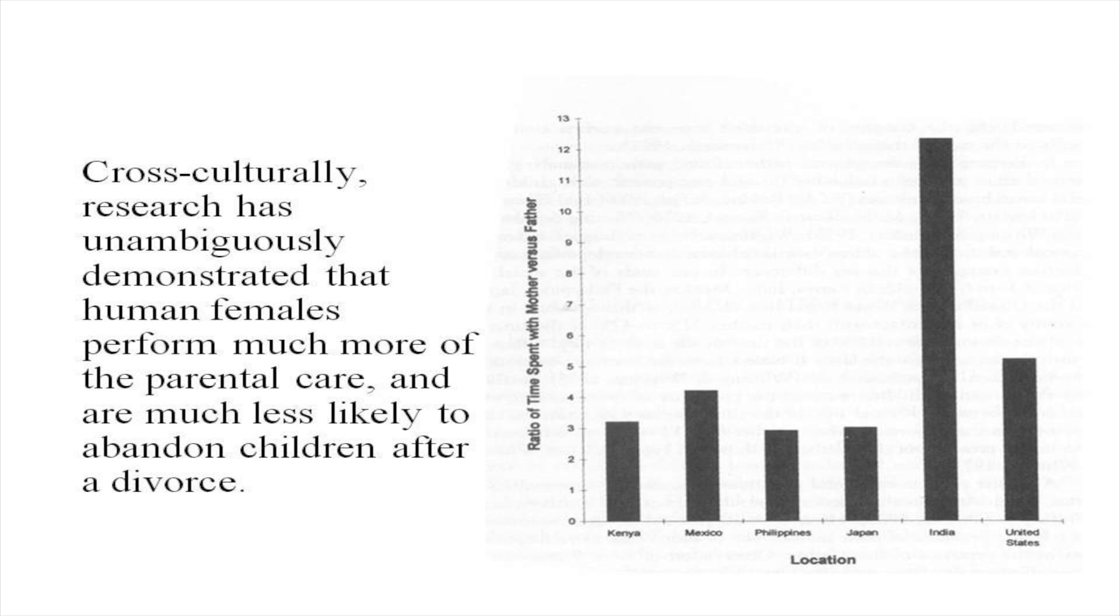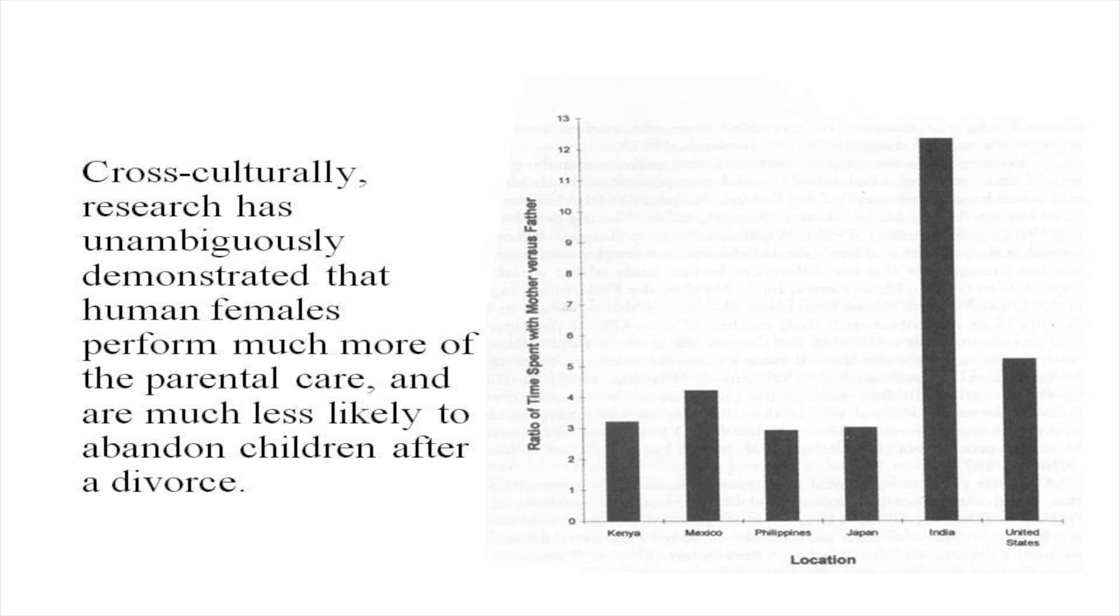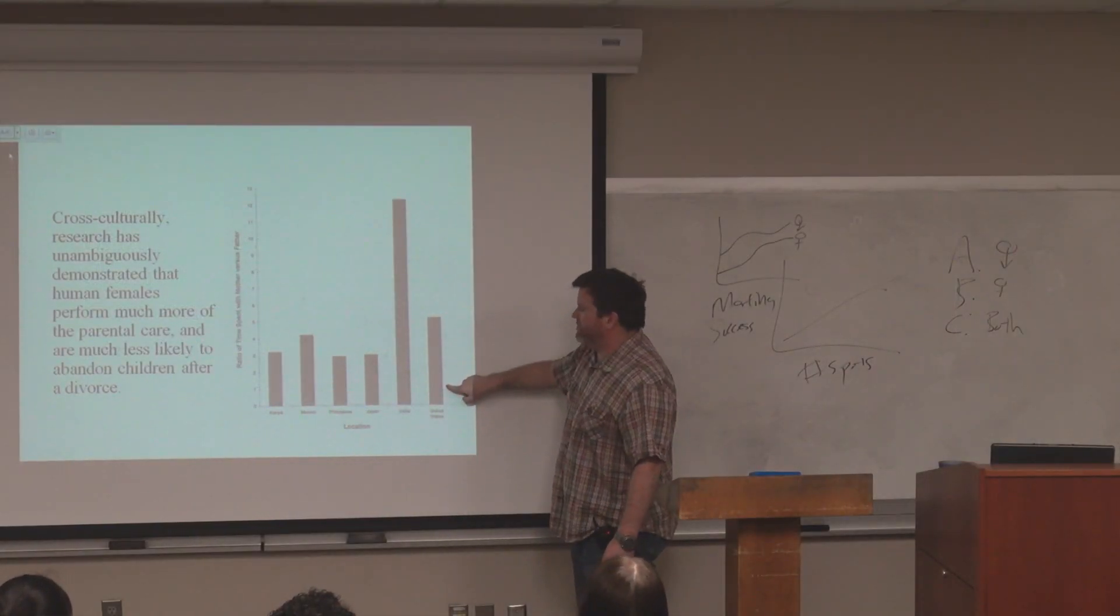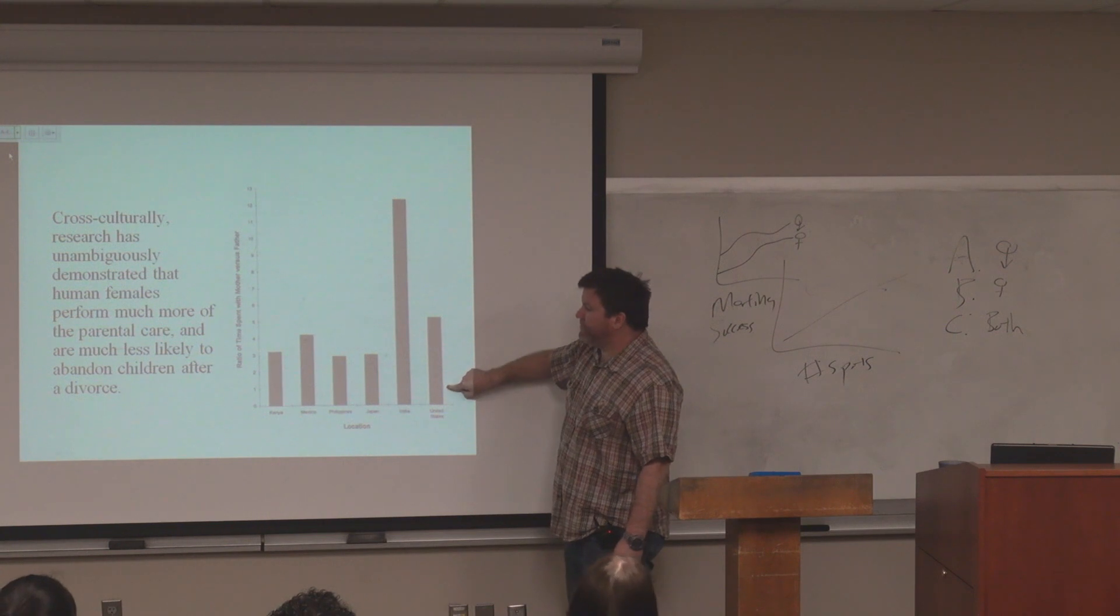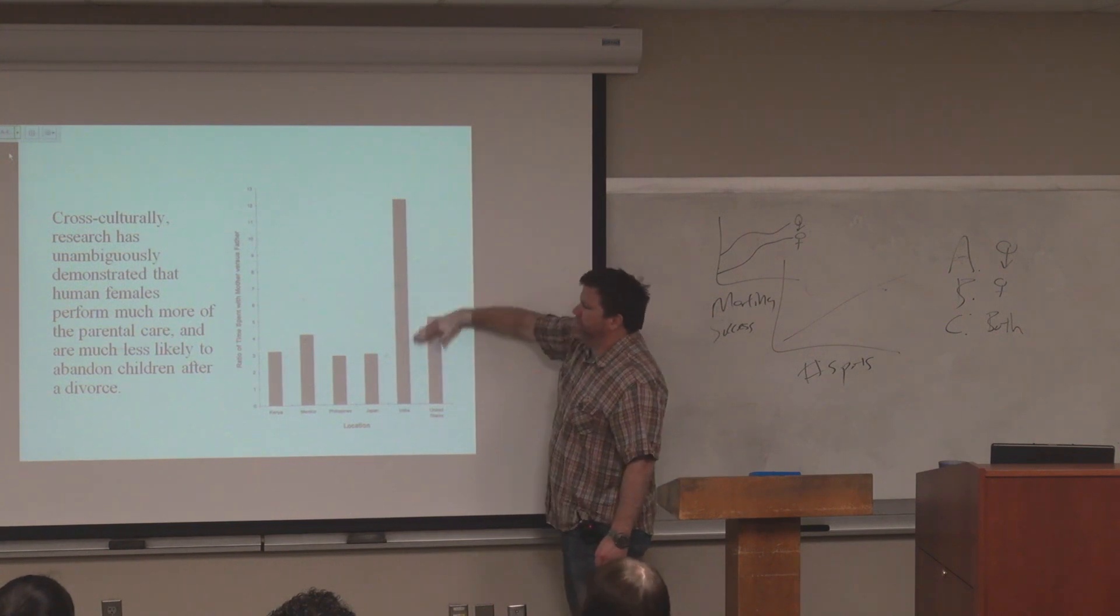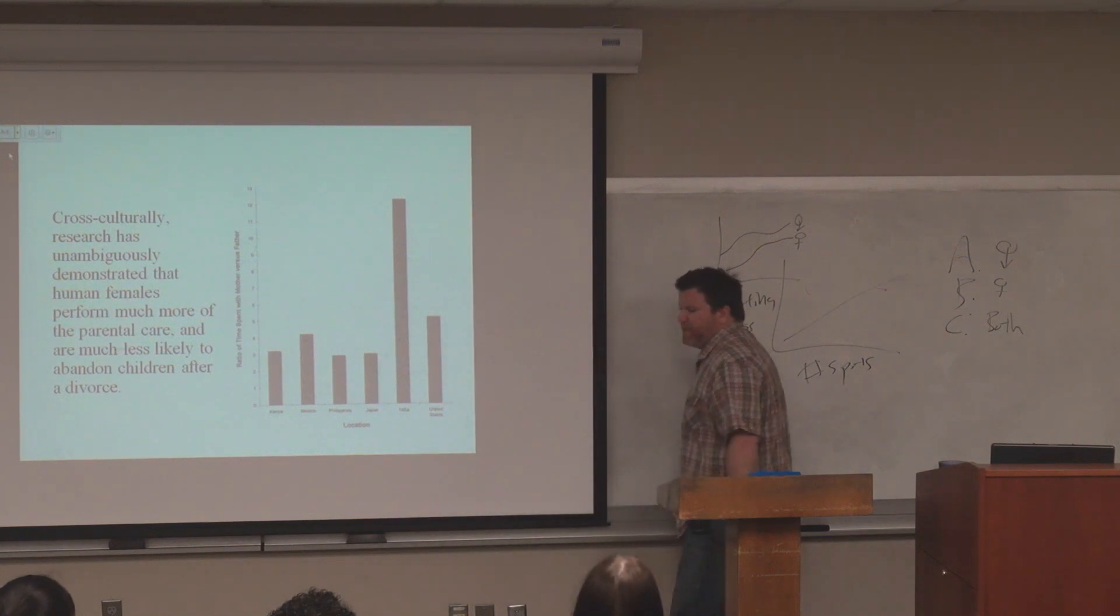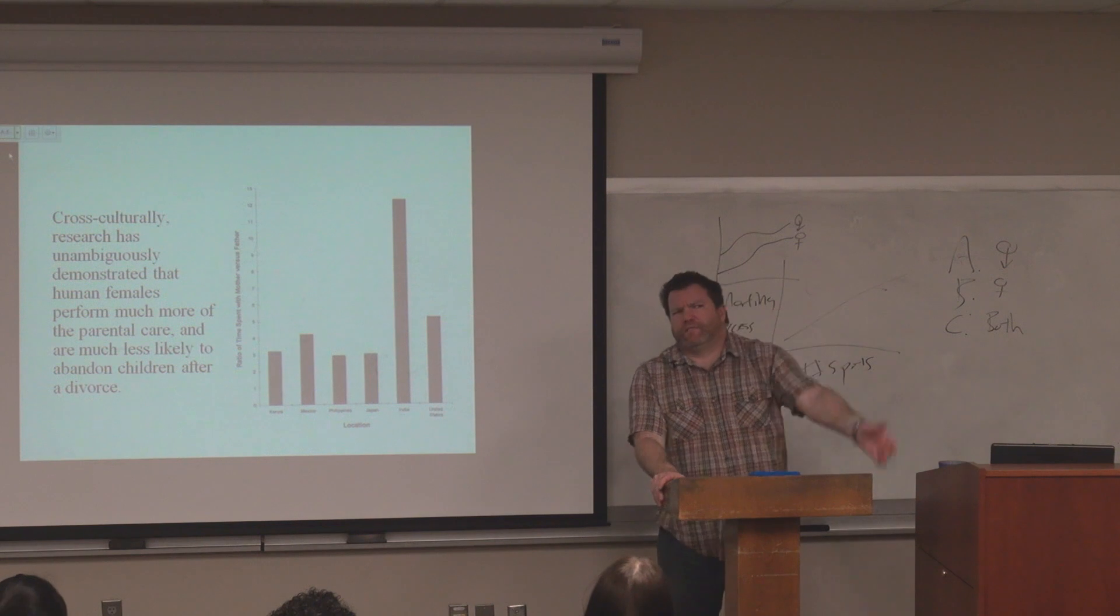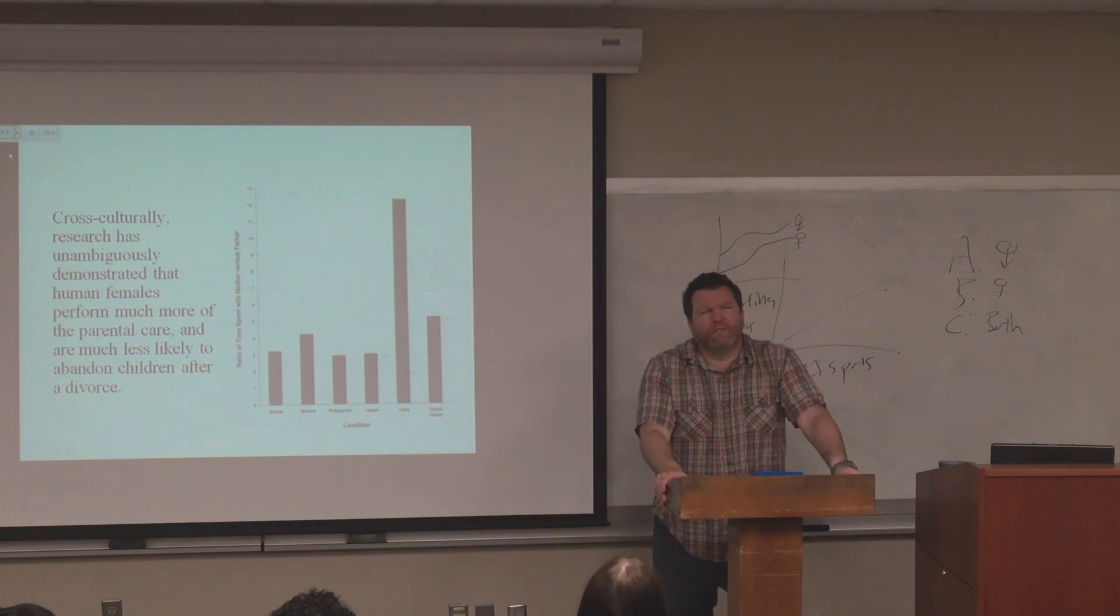So what we're looking at here is the ratio. So one would be equal amounts with both male or female. So any number here is the female is spending more time, and nearly every culture the female does the bulk of child rearing.